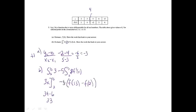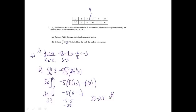There is a minus 5 sitting out front, so I carry that along. f of 13, from the chart, is equal to 6. f of 2 on the chart is equal to 1. So I have minus 5 times 5, which gives me minus 25. So 33 minus 25 gives me an answer of 8. That was worth 2 points.